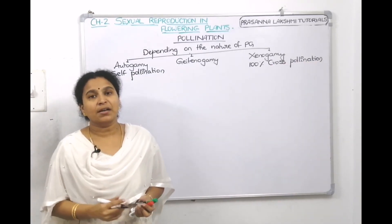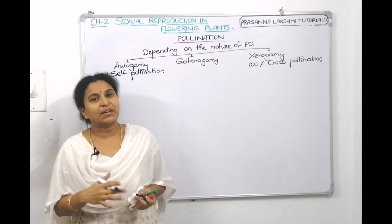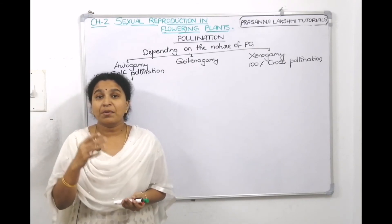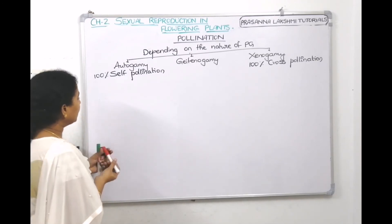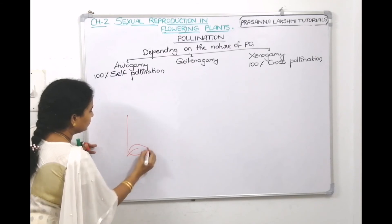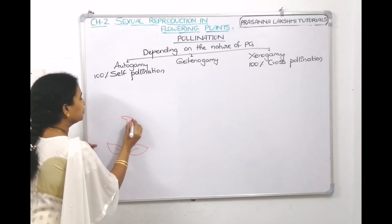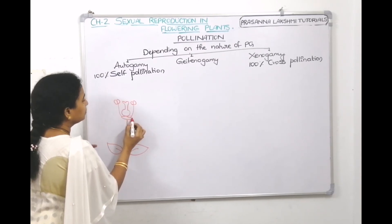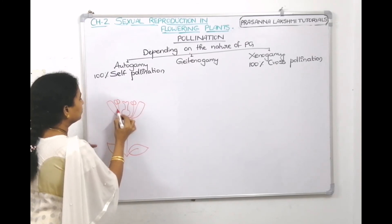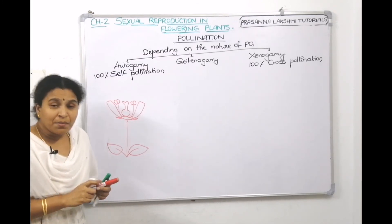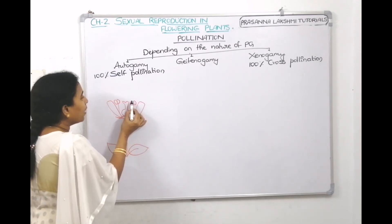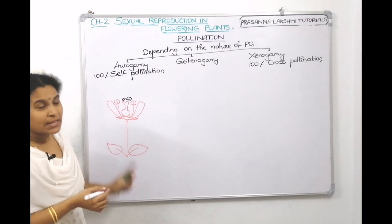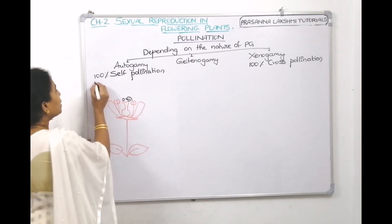Autogamy is self-pollination. In a perfect flower, pollen grains from the stamen come and land on the stigma of the same flower of the same plant. Pollen grains from the stamen land on the stigma of the same flower of the same plant — that is called autogamy, or self-pollination.